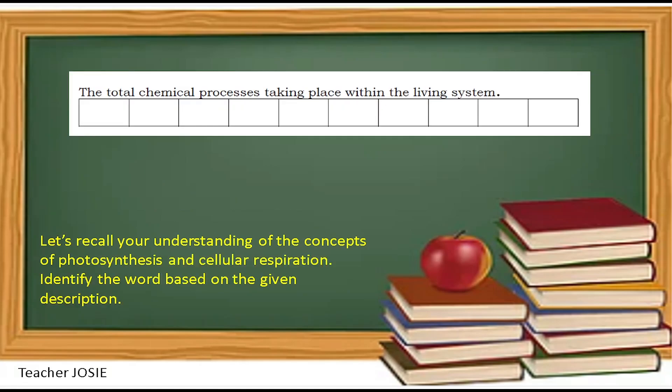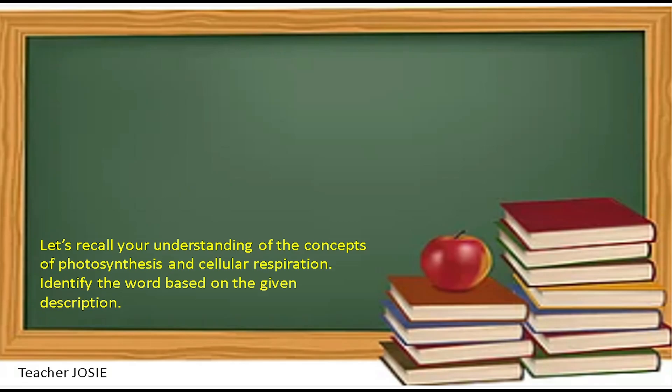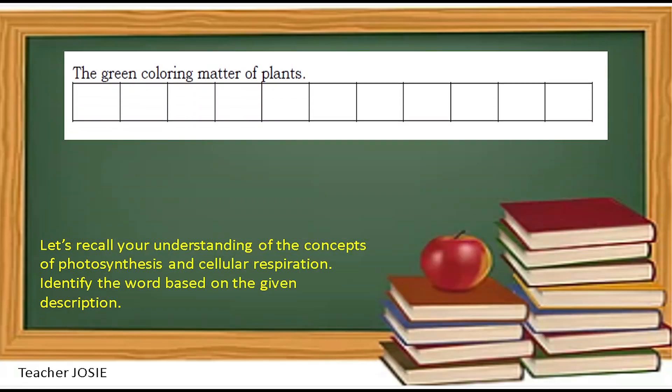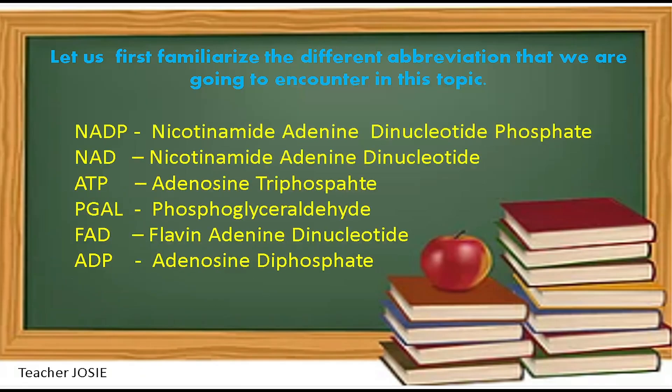Let's recall your understanding of the concepts of photosynthesis and cellular respiration. Identify the word based on the given description. The total chemical processes taking place within the living system — the answer is metabolism. The green coloring matter of plants — that is chlorophyll. Let us first familiarize the different abbreviations: NAD means nicotinamide adenine dinucleotide.